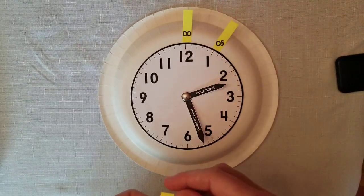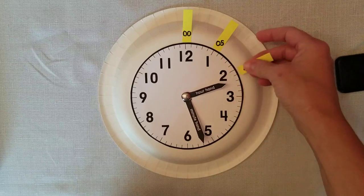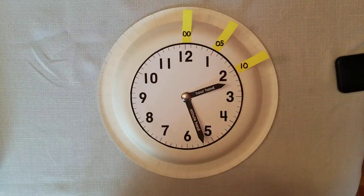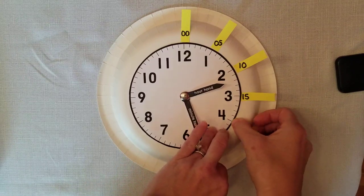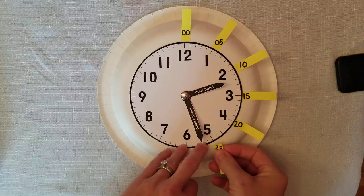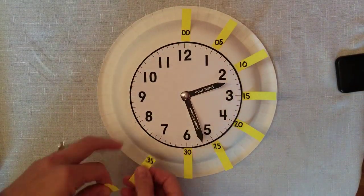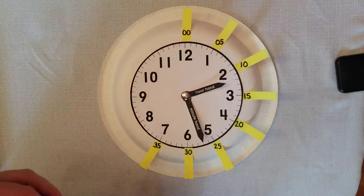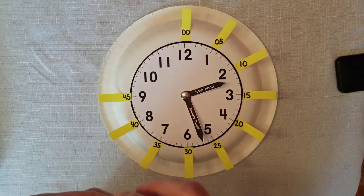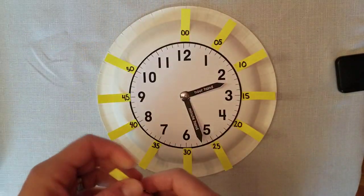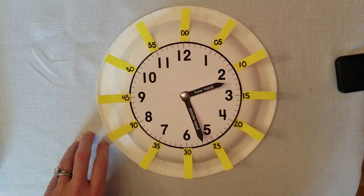We're counting by five minutes as we go around to each number. We start at zero or o'clock. Then one is five, two times five is ten, three times five is fifteen, four times five is twenty, five times five is twenty-five, six times five is thirty, seven times five is thirty-five, eight times five is forty, nine times five is forty-five, ten times five is fifty, and eleven times five is fifty-five. If we came back to twelve times five, we get sixty, which makes a whole hour, so we're back to our double zero for the o'clock.